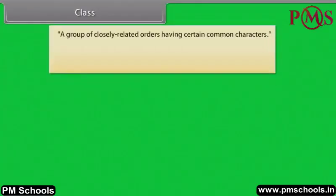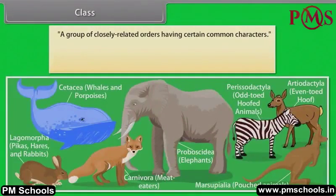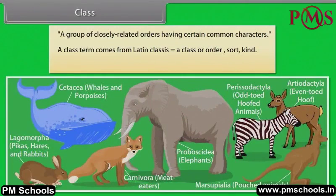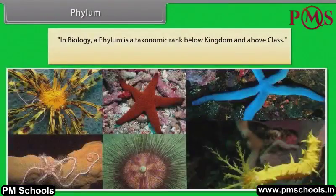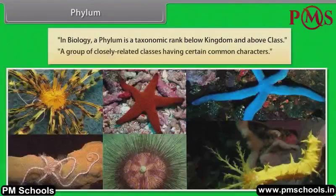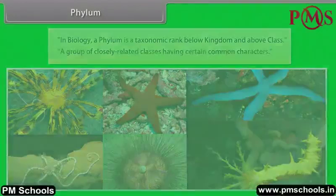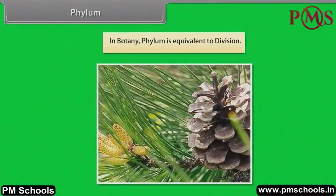A class is a group of closely related orders having certain common characters. The class term comes from Latin 'classes', meaning a class, order, sort, or kind. For example, class Mammalia. In biology, a phylum is a taxonomic rank below kingdom and above class — a group of closely related classes having certain common characters. In botany, phylum is equivalent to division.